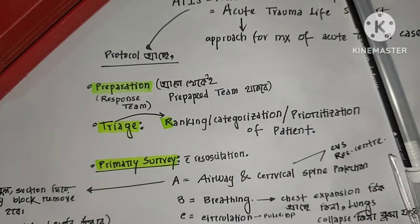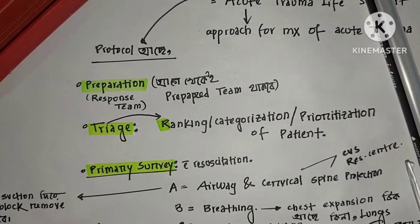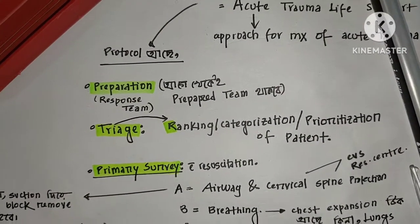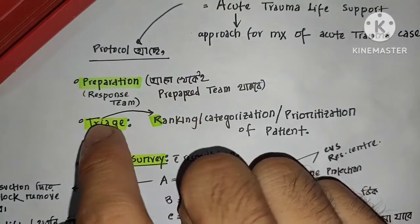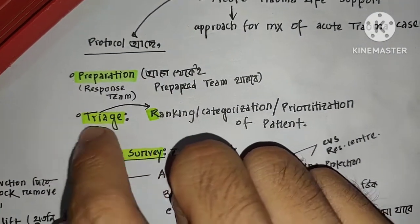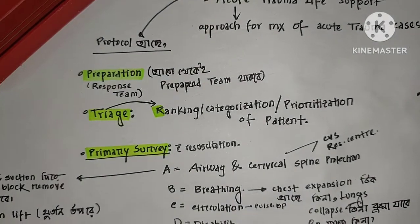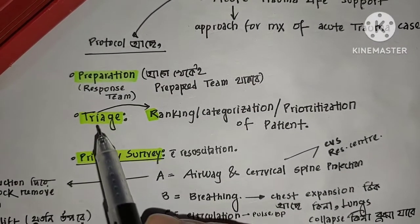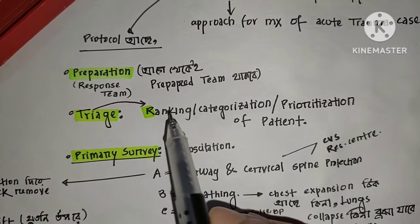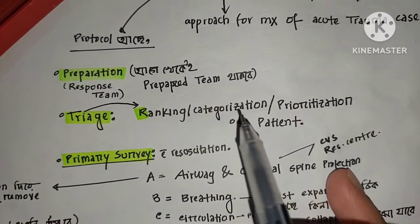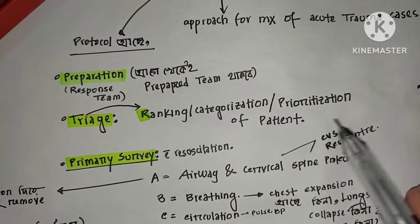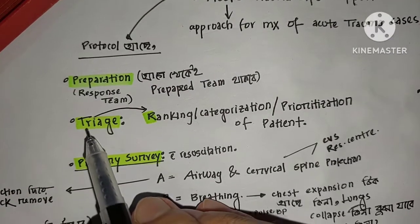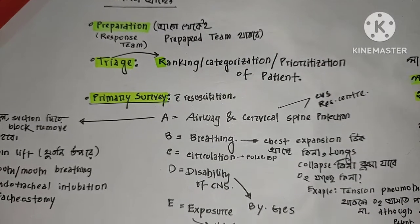If there are mass casualties — meaning if there is a large accident — then there is triage. What is triage? Triage is easy to understand. Triage is a ranking or categorization, or prioritization, of patients. We rank patients as part of the injury management system.